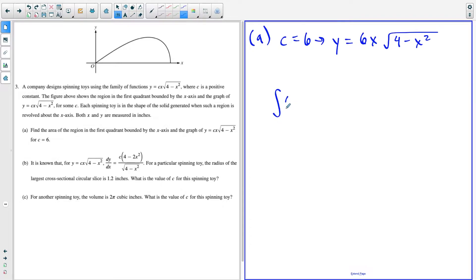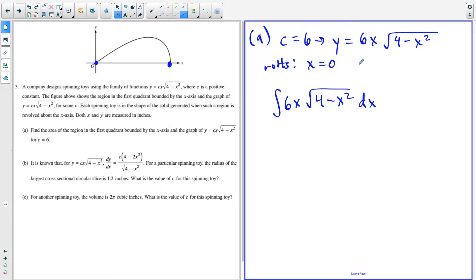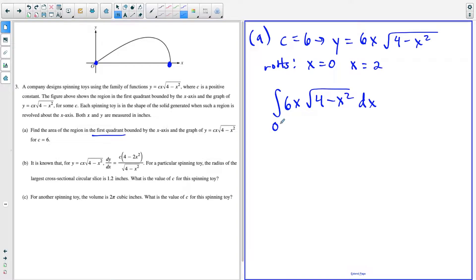So if we're letting C equal six, this tells us our equation is y equals six times x times the square root of four minus x squared. So what we need to know here is we have to know our limits of integration because we're going to set up this integral. We're going to have the integral of six times x times the square root of four minus x squared dx. But once again, we have to know where does this region start and stop. So for that, you're going to set the equation equal to zero, and your roots for quadrant one are going to be x equals zero and x equals two.